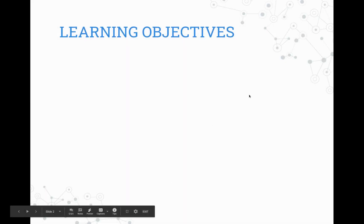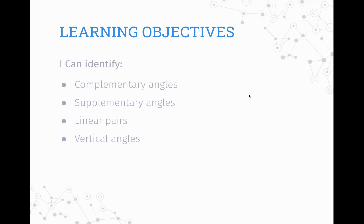Your learning objectives for this section are to identify complementary angles and supplementary angles. Those two I think you can probably already identify, but the two really important new things we're going to learn in this lesson are linear pairs and vertical angles. These are critically important because we're going to be using them throughout the entire course.